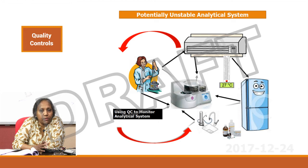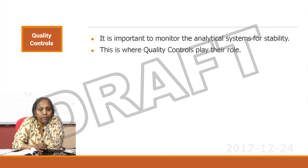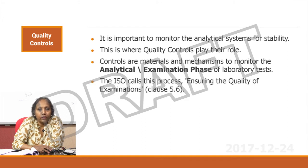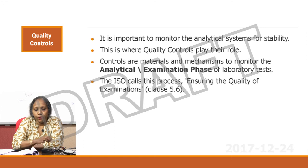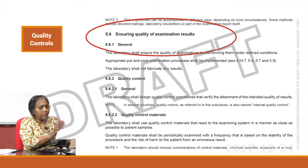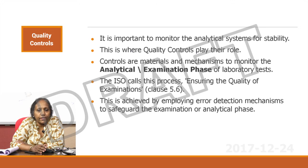So let us call it potentially unstable analytical systems. It is thus important to monitor the analytical system for stability, and this is where quality controls play their role. Controls are materials and mechanisms to monitor the analytical or the examination phase of laboratory tests. The ISO calls this process ensuring the quality of examination under clause 5.6, which is about ensuring the quality of examinations.